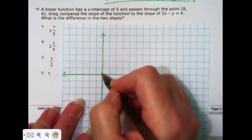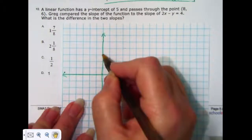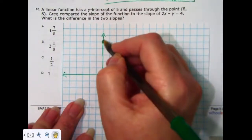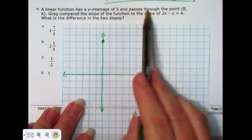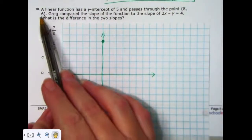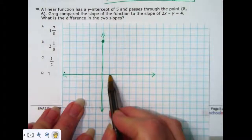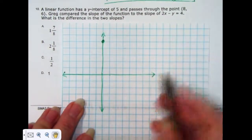So, I'm going to put a point at the y-intercept of 5. 1, 2, 3, 4, 5. It passes through the point 8, 6. So, I count over 1, 2, 3, 4, 5, 6, 7, 8.